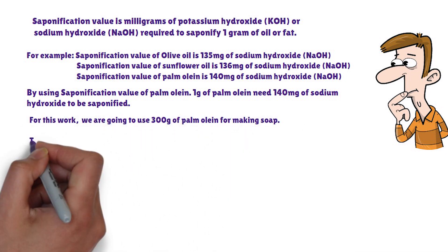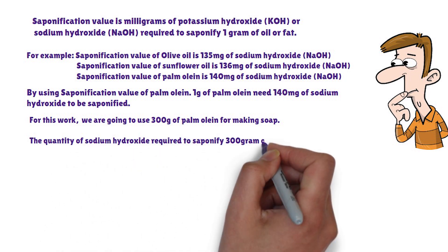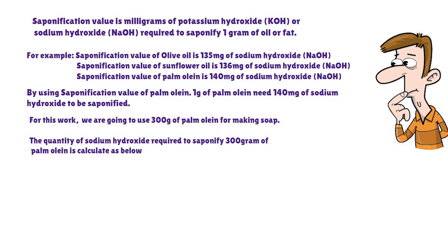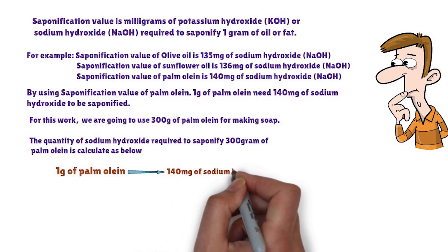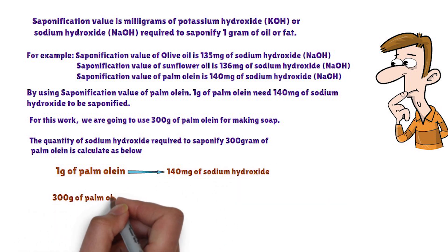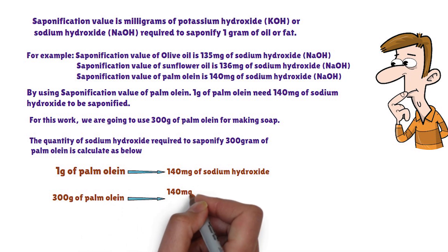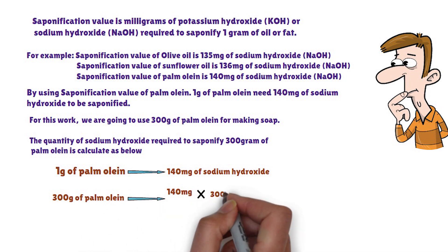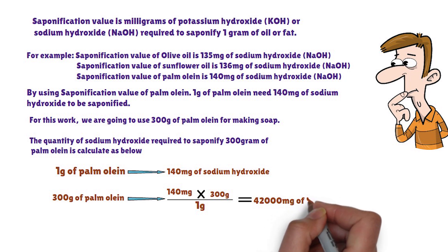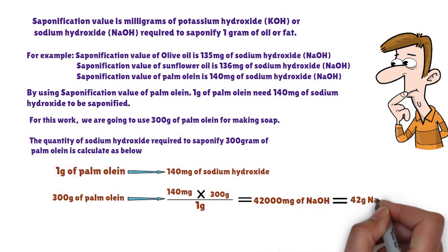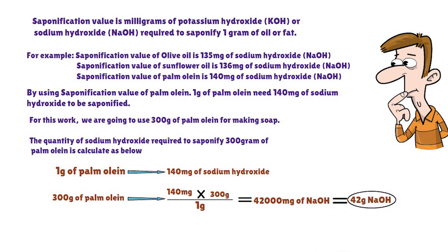In this work, we are going to use 300 grams of palm oil for making soap. The quantity of sodium hydroxide required to saponify 300 grams of palm oil is calculated as follows: 1 gram of palm oil needs 140 milligrams of sodium hydroxide, so 300 grams needs 42,000 milligrams, which equals 42 grams of sodium hydroxide.